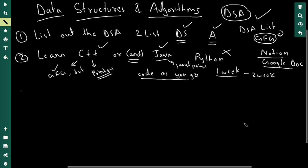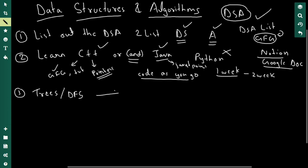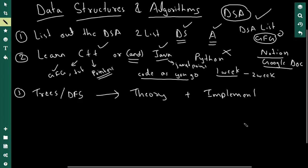So far, you've learned C++ and/or Java. Now you're going to take your list of data structures and algorithms and pick either DS or algorithms — you can do both simultaneously. For any data structure or algorithm, there are two parts: theory and implementation. You need to know both to master it.